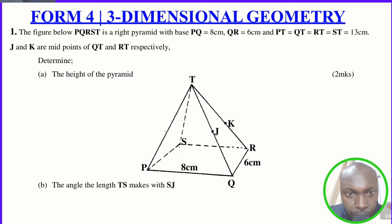Three-dimensional geometry. Question number one. The figure below PQRST is a right pyramid with the base PQ equals 8 cm, QR equals 6 cm, PT equals QT equals RT equals ST equals 13 cm. J and K are midpoints of QT and RT respectively.